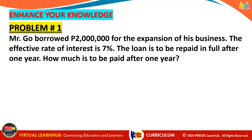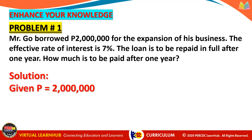Problem number one: Mr. Go borrowed 2 million pesos for the expansion of his business. The effective rate of interest is 7%. The loan is to be repaid in full after one year. How much is to be paid after one year? The given is P equals 2 million pesos, where P is the amount borrowed by Mr. Go. The interest rate J is 7% or 0.07, and the period N equals 1, representing one year.